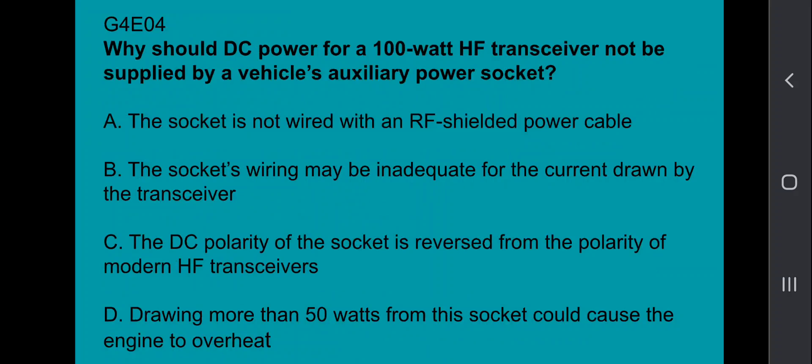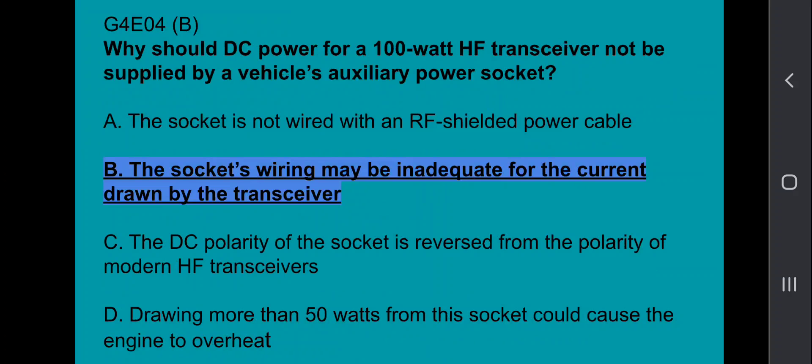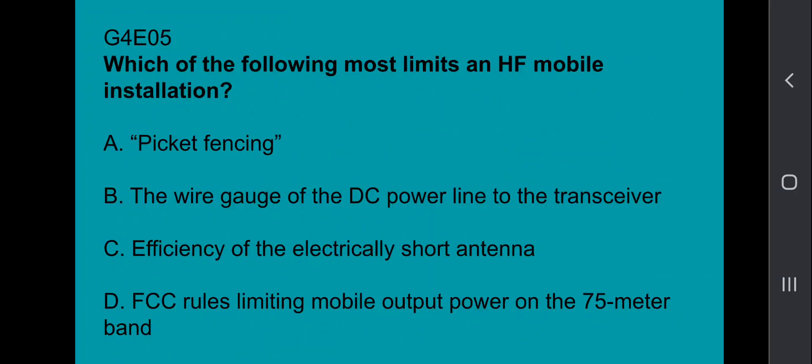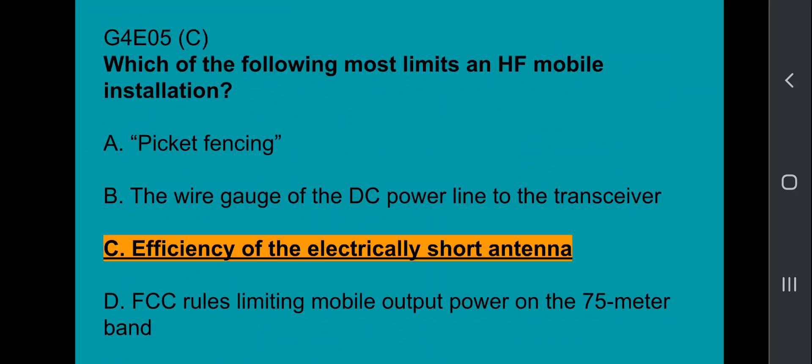G4E04, why should DC power for a 100-watt HF transceiver not be supplied by a vehicle's auxiliary power socket? The socket's wiring may be inadequate for the current drawn by the transceiver. G4E05, which of the following most limits an HF mobile installation? Here is the efficiency of the electrically short antenna. It's difficult to have a large HF antenna while mobile.